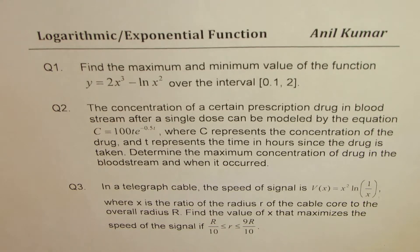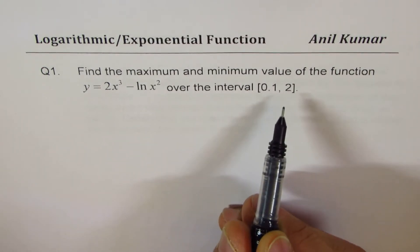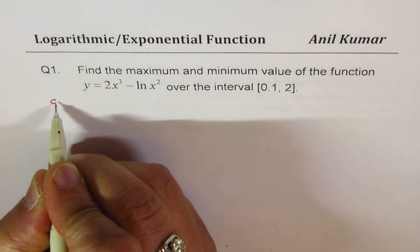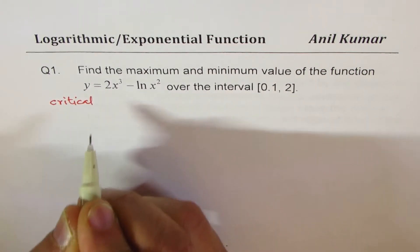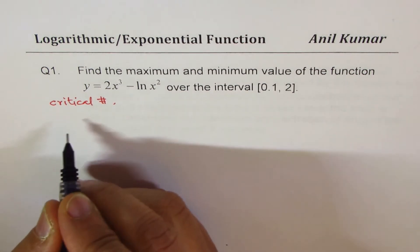Here is question number one: find the maximum and minimum value of the function y = 2x³ − ln(x²) over the interval 0.1 to 2. This is a closed interval, so we'll have an absolute maximum and absolute minimum. To find that, let's find the critical number first. We'll begin by finding the first derivative, which should be equal to zero or undefined for a critical number.